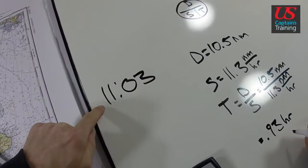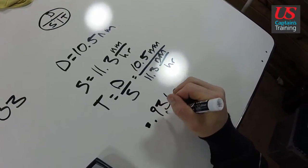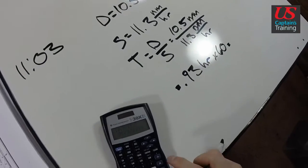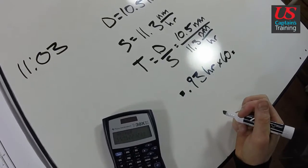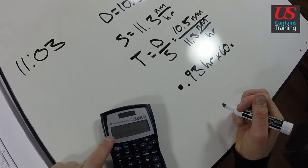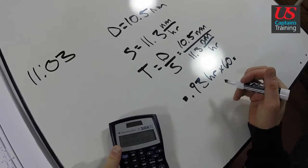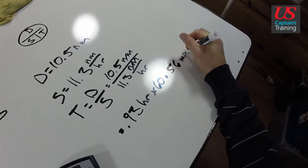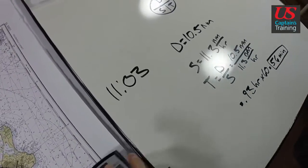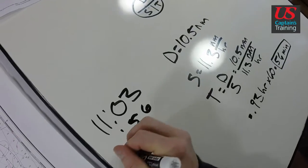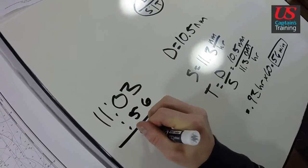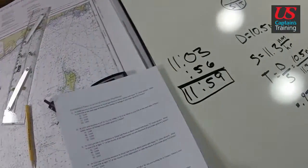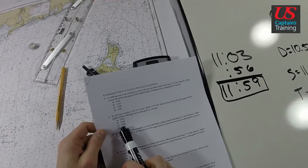We need to add 0.93 hours to 11:03. First, we convert 0.93 hours to minutes by multiplying by 60: 0.93 times 60 equals 55.75 minutes, which we round up to 56 minutes. Now we take 56 minutes and add it to 11:03 — so 6, 7, 8, 9... our answer is 11:59.